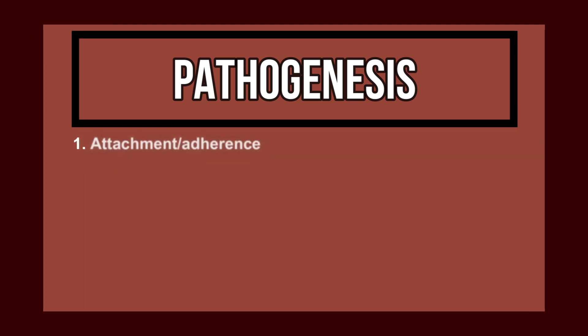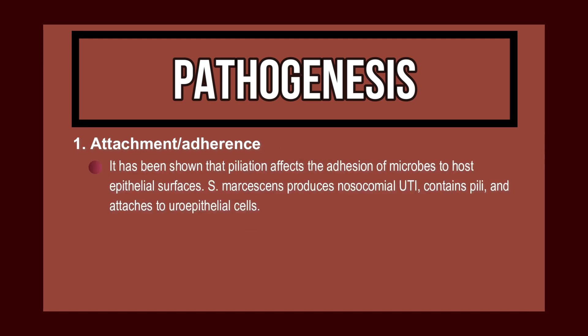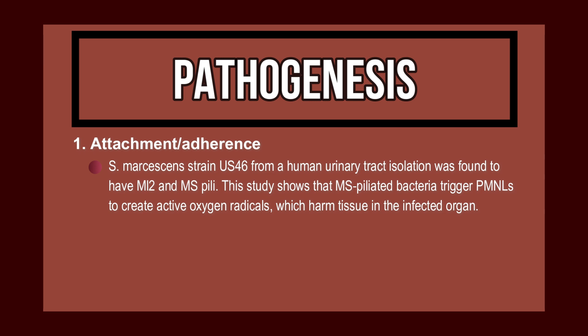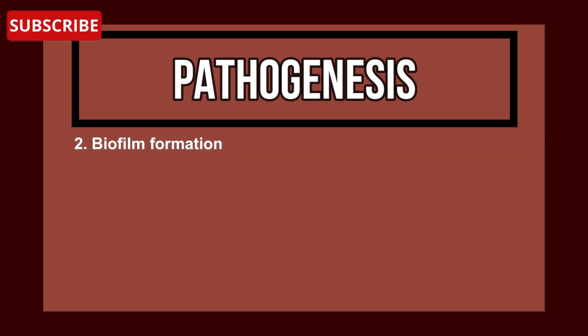This enterobacterium has virulent characteristics that allow it to colonize and survive on surfaces including catheters and medical equipment, induce the immune response, and build antibiotic resistance. Regarding attachment, it has been shown that proliferation affects adhesion of microbes to host epithelial surfaces. Serratia marcescens producing nosocomial UTIs attaches to uroepithelial cells. Two classes of adhesins have been proposed: mannose-resistant type, which agglutinates chicken erythrocytes in the presence of D-mannose, and mannose-sensitive type.